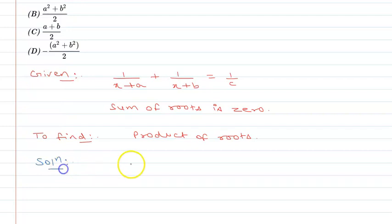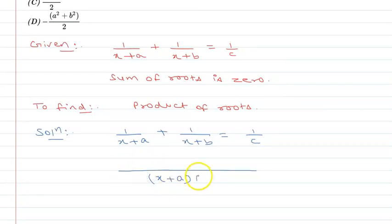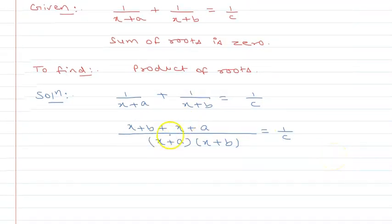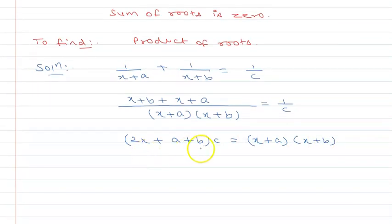So let's simplify. I have the equation 1/(x+a) + 1/(x+b) = 1/c. Taking LCM on the left side, we get (x+b + x+a) / ((x+a)(x+b)) = 1/c, which gives us (2x + a + b) / ((x+a)(x+b)) = 1/c.